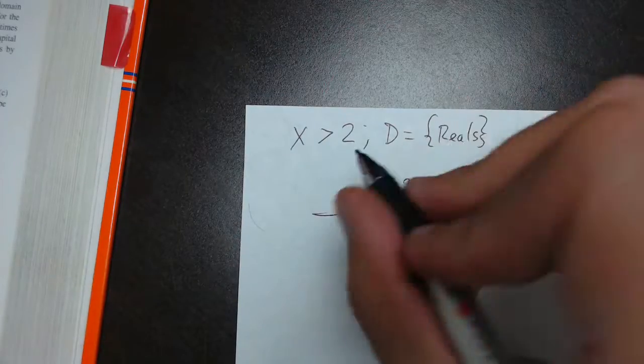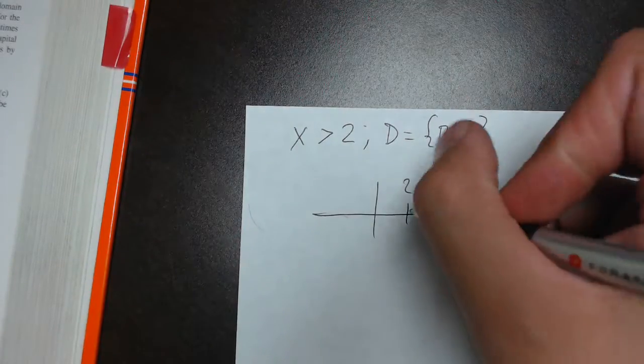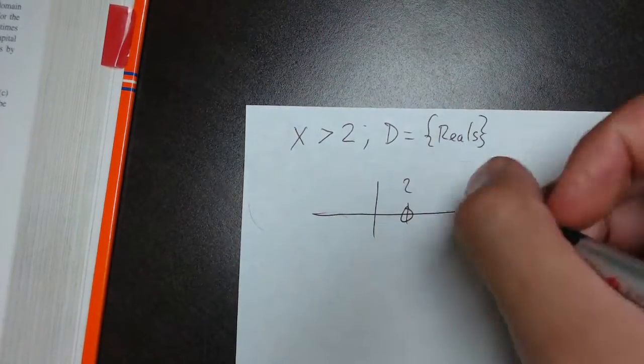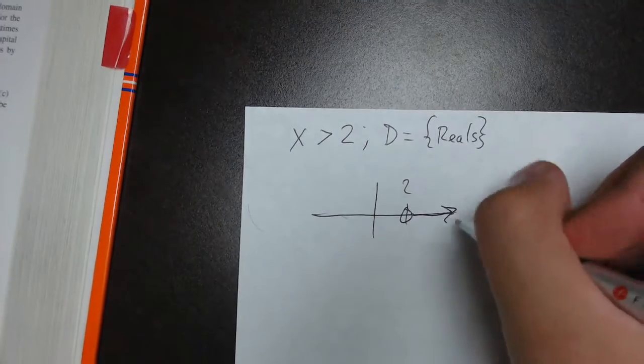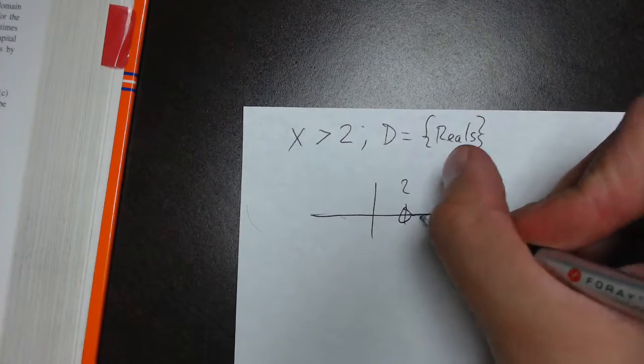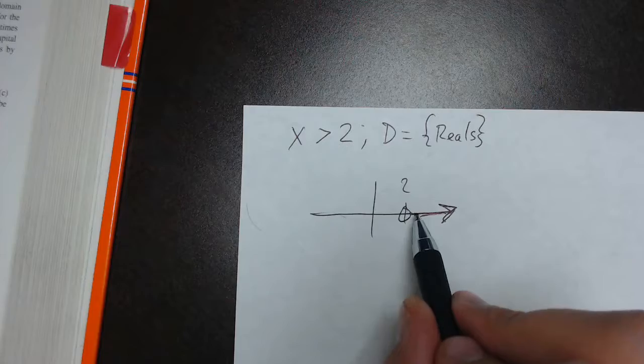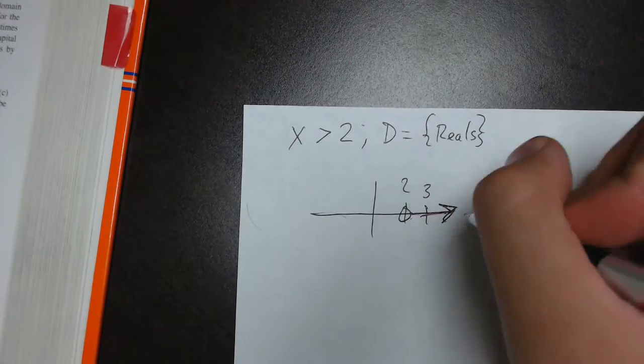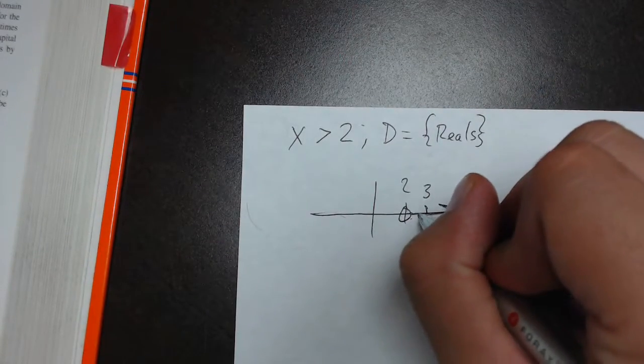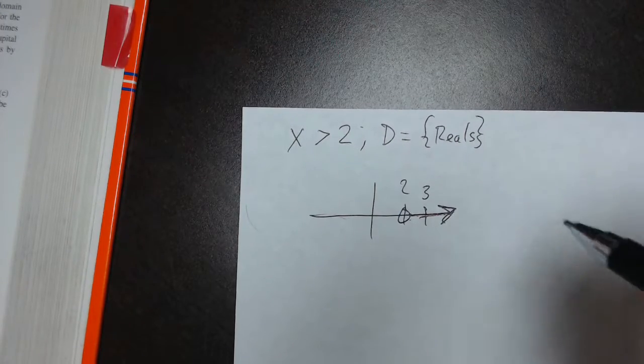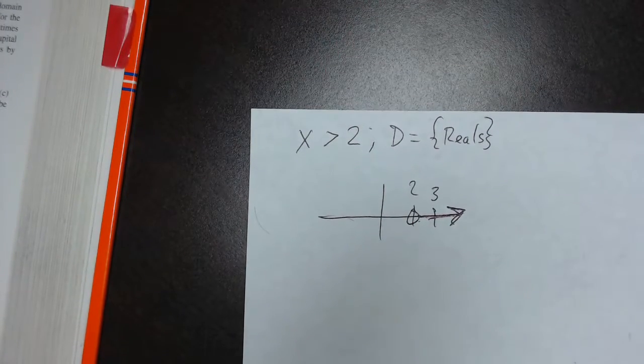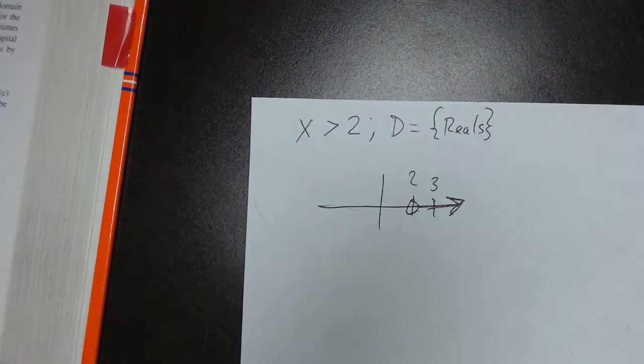We go to 2 on the number line. x is not equal to 2, so we'll put an open circle. And then greater than means I'm going to the right. And I'm going to just draw a straight line because real numbers includes every single number on the number line. It includes 3, includes 4, and includes all the fractions and decimals in between 3 and 4 and going on into infinity. So that one's not too hard.